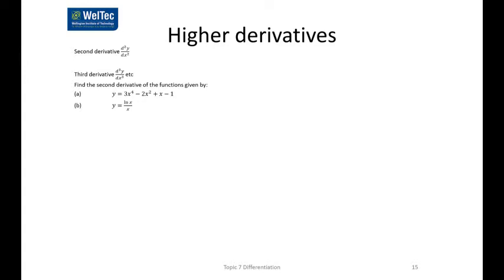If we can find the first derivative, then we can find the second derivative, because we just do it again. If we've done it twice, we can do it a third time, and so on. So the second derivative of displacement must be acceleration, because it's the derivative of the derivative — the first derivative was velocity, so the rate of change of velocity is acceleration. The second derivative of the displacement function is acceleration.